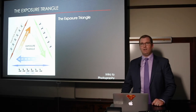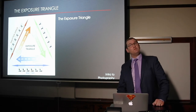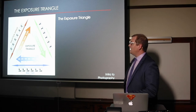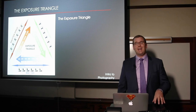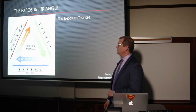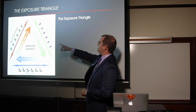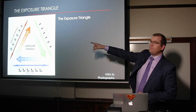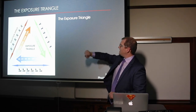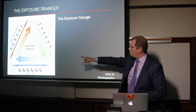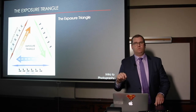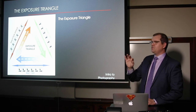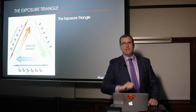This is the exposure triangle. It's a very good visualization of why exposure is important and how to understand it. You have three different sides: top left — shutter speed; right side — aperture; bottom — ISO. These are three different things we need to understand if we're going to take a good image.